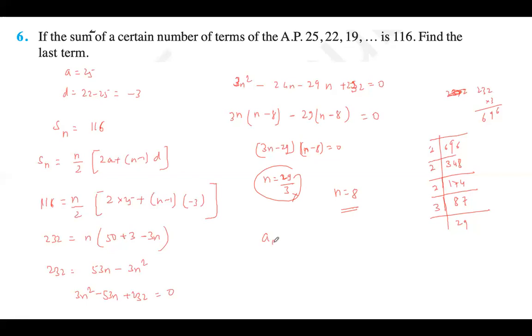Find the last term. a₈ equals a plus 8 minus 1 times d. So first term is 25 plus 7 into minus 3. 25 minus 21 equals 4.